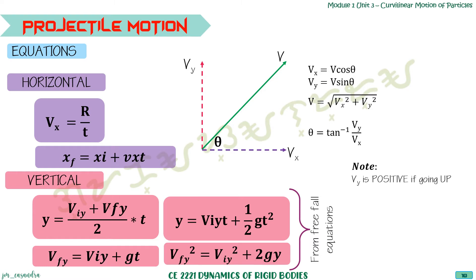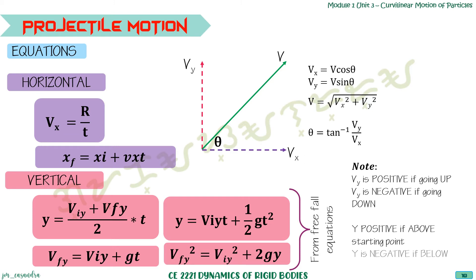Sign conventions: vy is positive if the particle is going up, negative if going down. y is positive if the particle is above the starting point, negative if below. g is always a negative value.